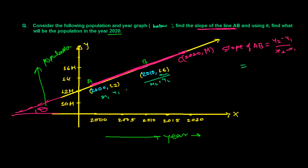16 minus 12. 16 minus 12 over 2010 minus 2000. So it's going to be 16 minus 12, that's 4, and 2010 minus 2000, that's 10. So 2 times 2, 2 times 5. So our slope of AB is going to be 2 over 5. That's the slope of AB.